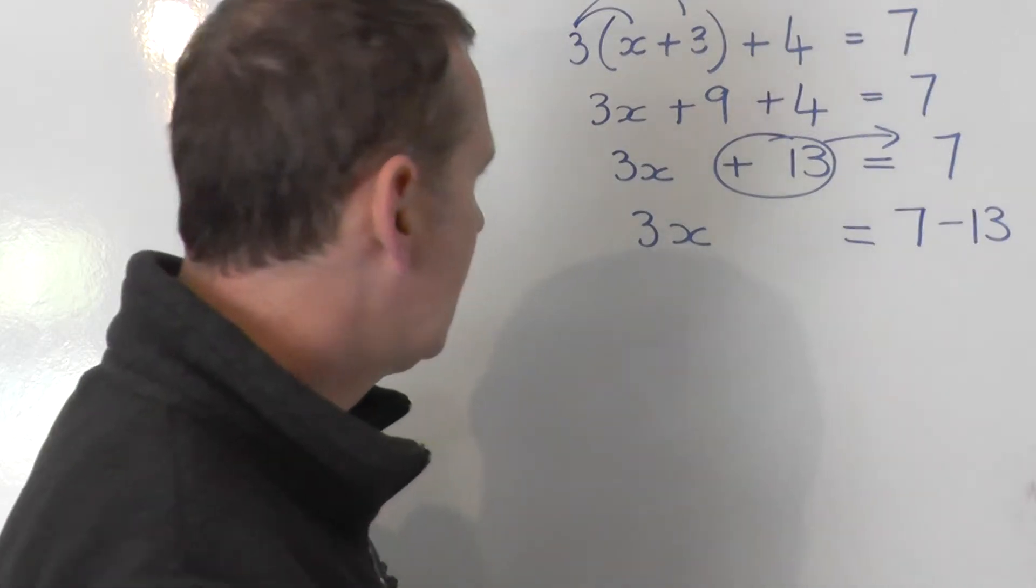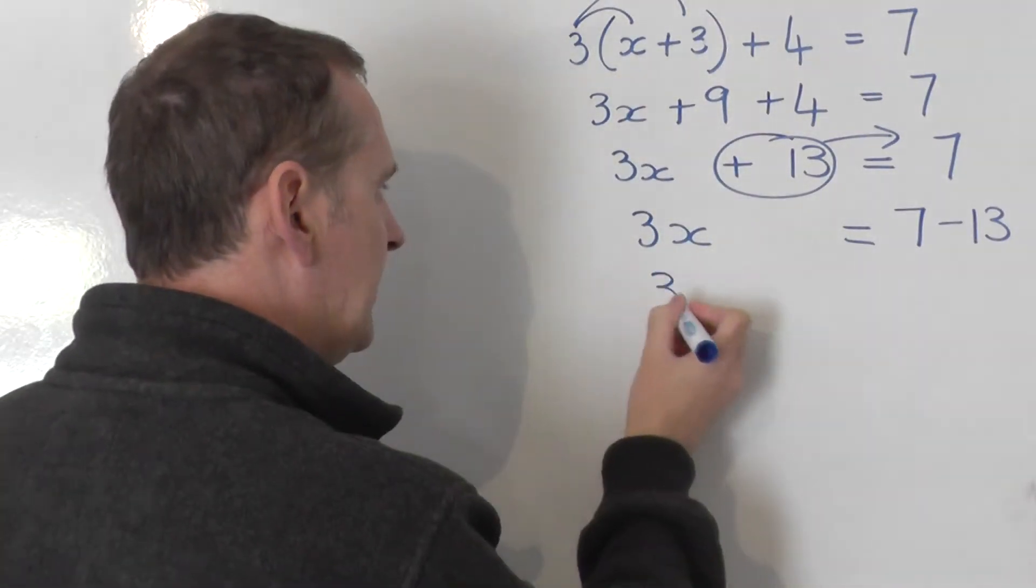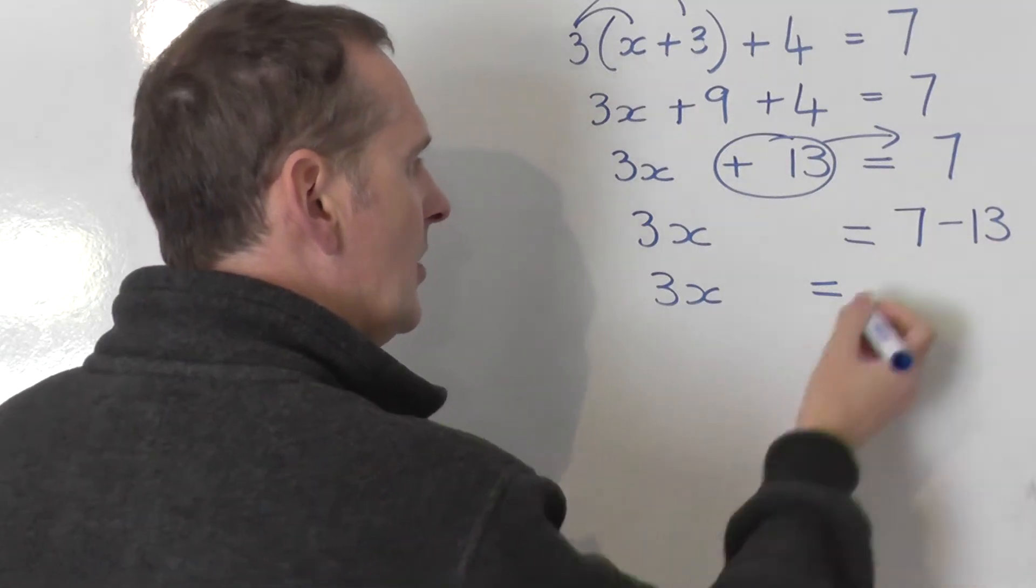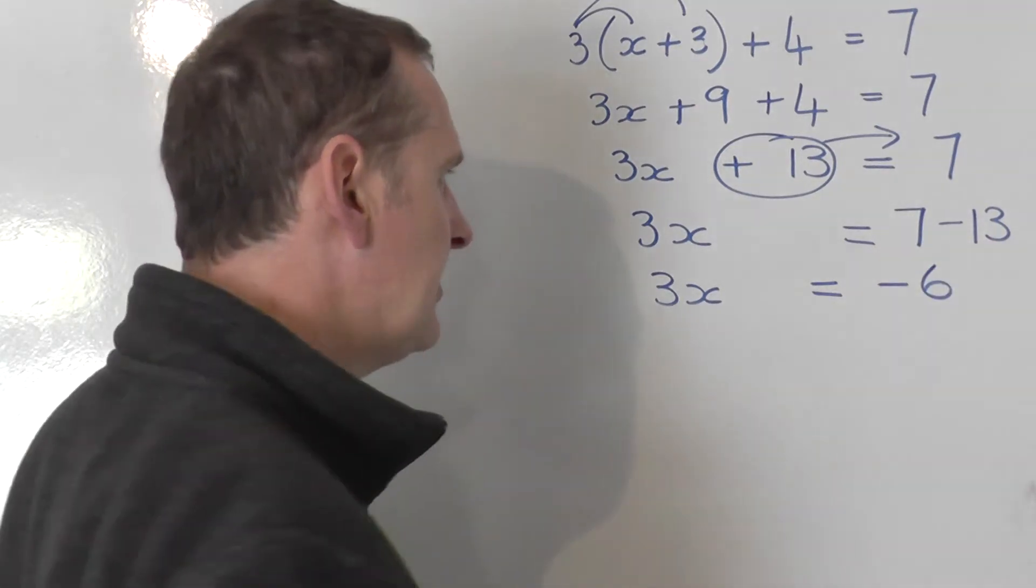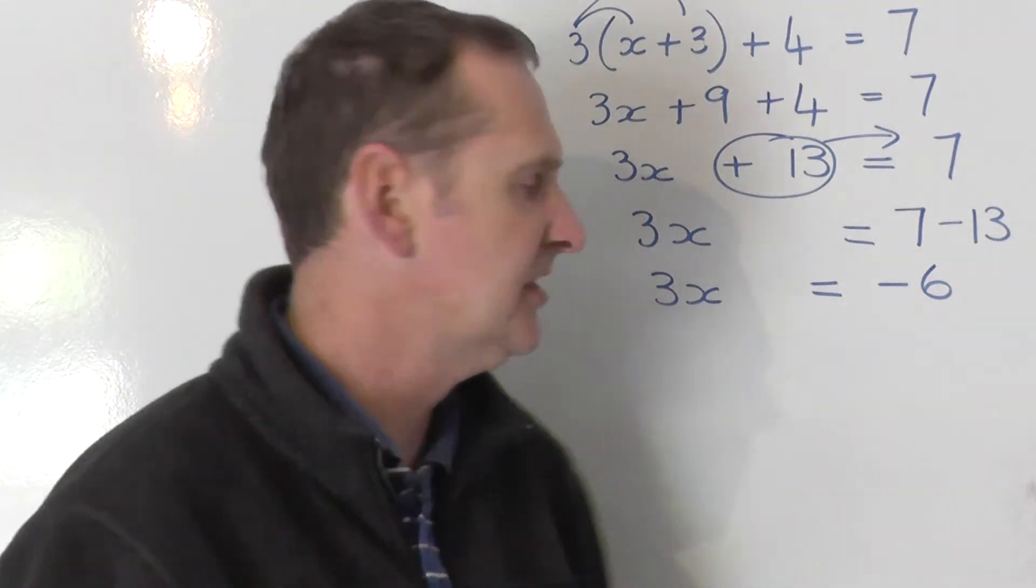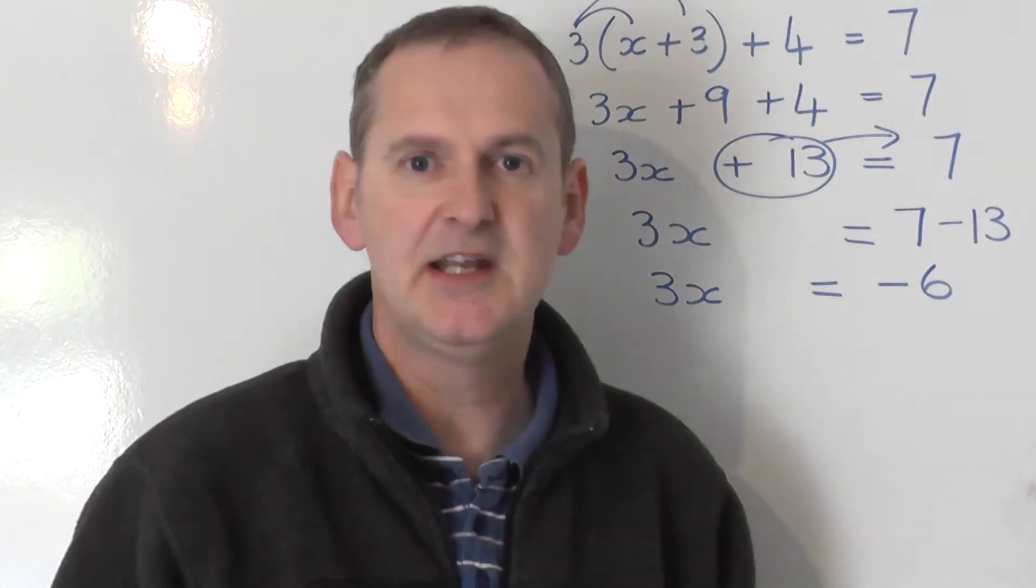OK, so let's just tidy things up. 3x on the left is equal to, and now 7 take 13, well on a number line or using army method, positive 7 minus 13, the minuses have got more by 6. So we get 3x equals negative 6.